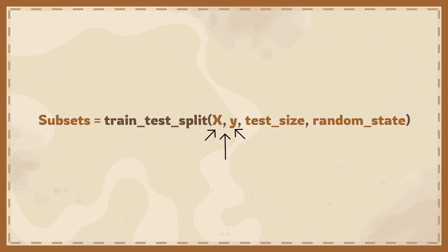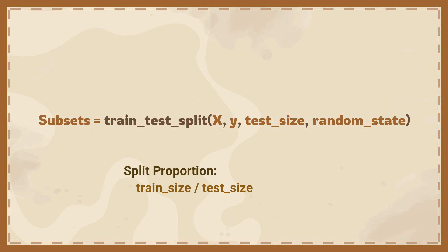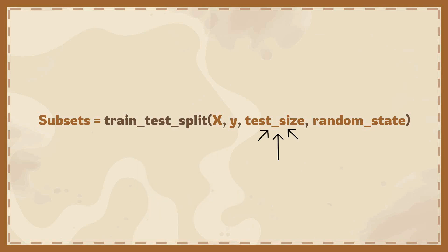Here, x and y values represent the dataset, where x is the input samples and y is the target values. In order to specify the splitting proportion, we have two parameters: train_size or test_size. We can use any one of these two to represent the proportion. If you specify the test size, that will automatically decide the train size.